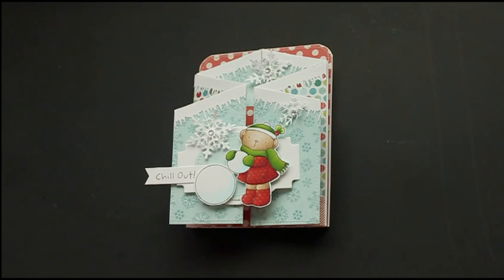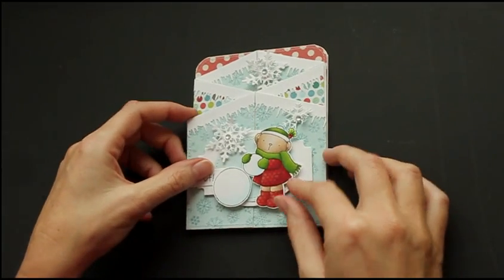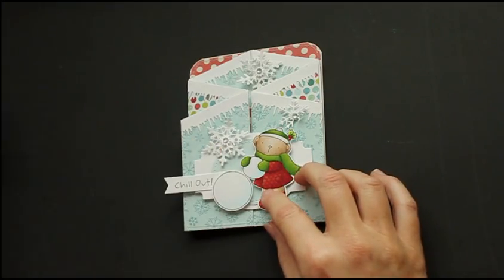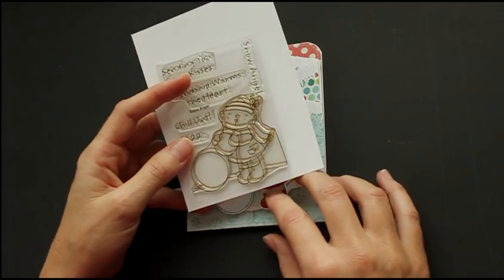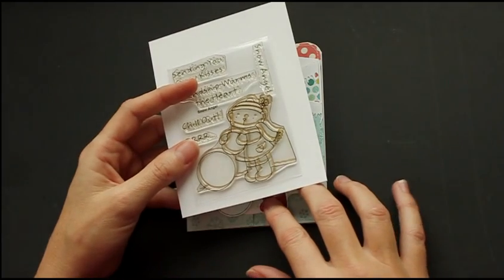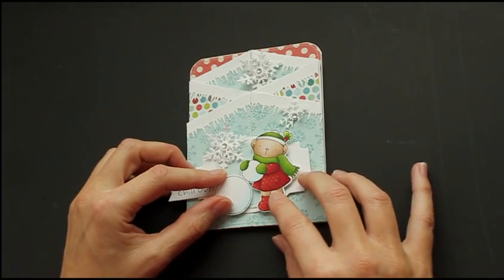Hi, this is Beate from Splitcoaststampers. In this video, I want to show you how to create a cascading or Constantiner card. For my sample, I used stamps and dies from My Favorite Things, and the stamp set is called Snow Angel, and most of the paper is from My Mind's Eye Winter Wonderland.